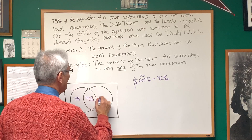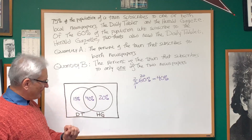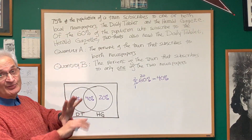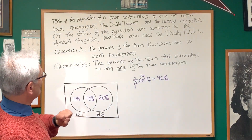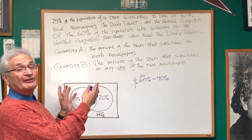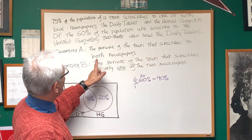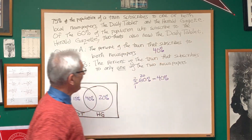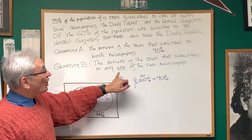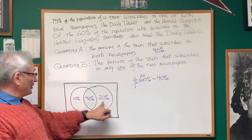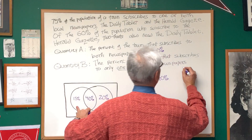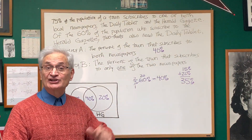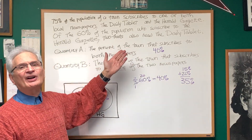So the intersection is 40%, and the Herald Gazette-only portion is 20%. Inside the Herald Gazette circle we have a full 60%, and adding all three regions together we get the 75% that represents the entire population reading either newspaper. Quantity A — the percent subscribing to both — is the area of intersection: 40%. Quantity B — the percent subscribing to only one newspaper — is 15% plus 20%, which is 35%. So the answer is A; Quantity A is larger.